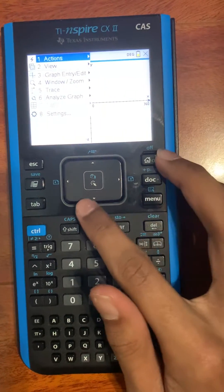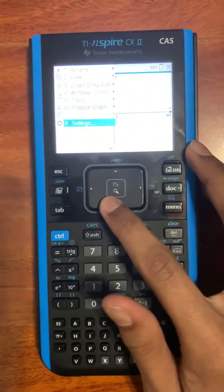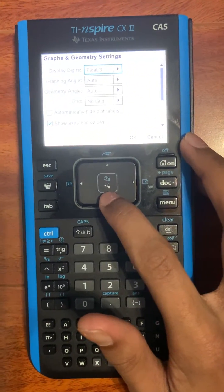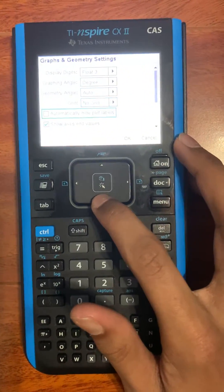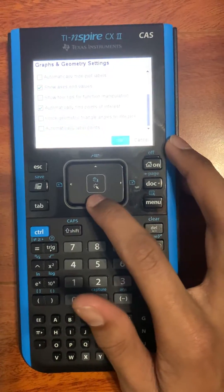This is one of the most important steps you have to do. Go to settings and here you go to graphing angle. I'll set it to degrees, but if you want radian answers then you can also set it to radians.